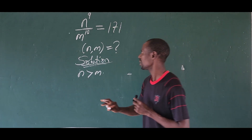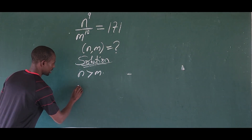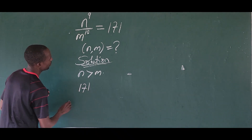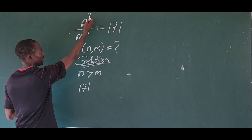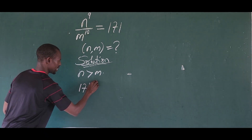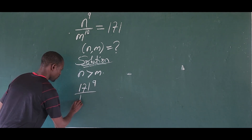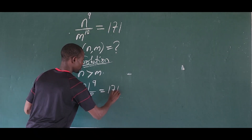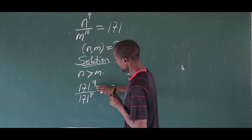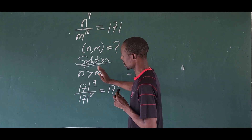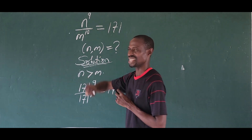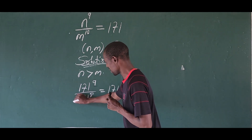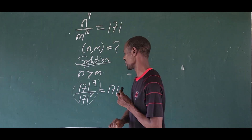Now if you look at this — because the result is positive — we can write 171 to the power of 9 in the numerator, then all over 171 to the power of 8 in the denominator. This gives us 171. The numerator works out, but look at the denominator — we need it to the power of 10. So we are going to figure out our answer within this domain.